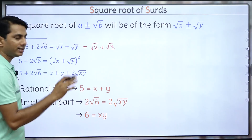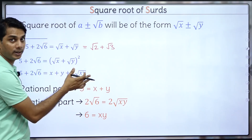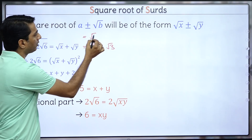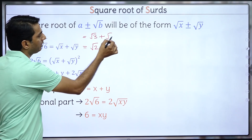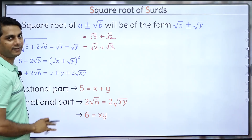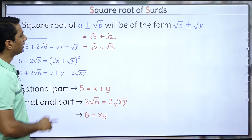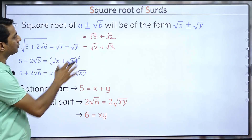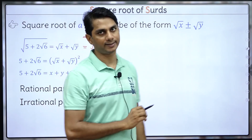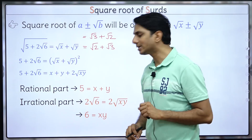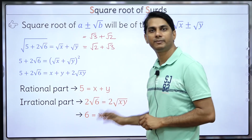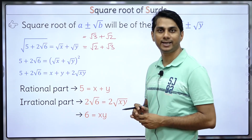Since x and y are 2 and 3, the square root comes out to be √2 + √3. There's no issue whether x = 2 or x = 3 — whether you say √2 + √3 or √3 + √2, it's one and the same thing. So √(5 + 2√6) = √2 + √3.